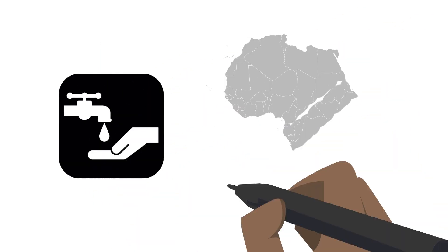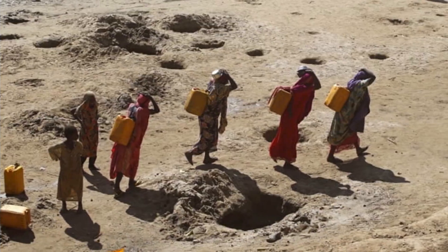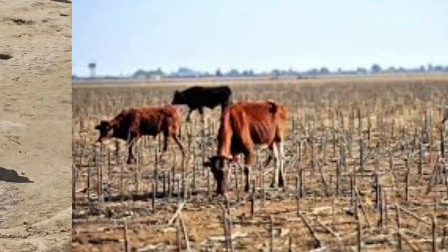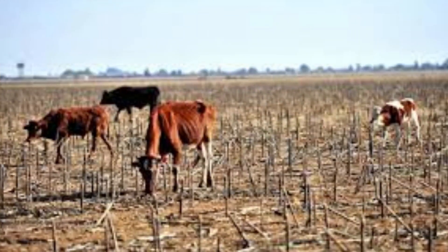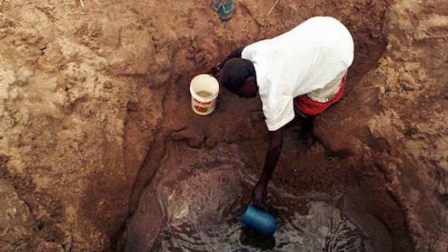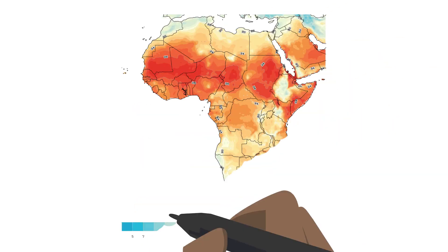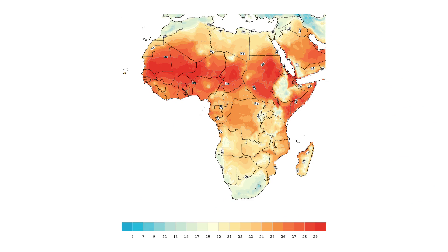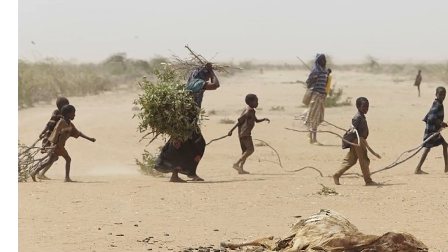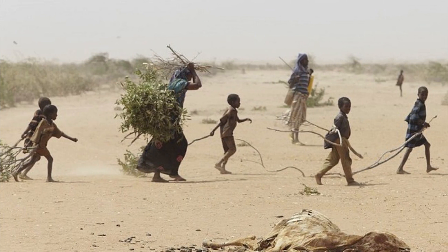Water scarcity is particularly acute in Africa, where of the estimated 800 million people who live on the continent, more than 300 million live in water-scarce environments. Moreover, due to climate change, it is estimated that between 75 million and 250 million people in Africa will be living in areas of high water stress by 2030. It is also estimated that water scarcity in some arid and semi-arid places in Africa will likely displace between 24 million and 700 million people by 2030.